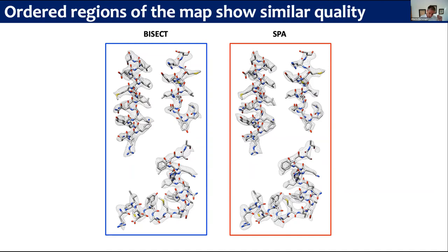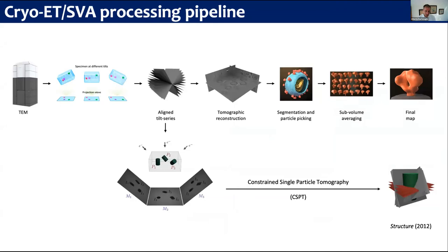Now I want to switch gears and focus more on the data analysis part in cryo-ET, which I think is a lot more stimulating than it is in single particle cryo-EM. I showed you at the beginning, briefly, the processing pipeline. So we collect the tilt series, we do the regular tilt series alignment, reconstruction, segmentation, particle picking, sub-volume averaging, and then we get our final map. That's the standard workflow.